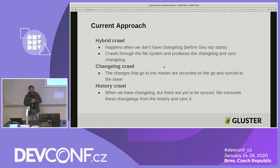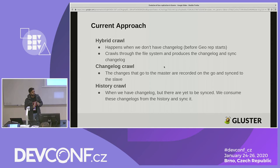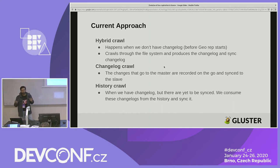The third scenario: you have a number of change logs already made but you've stopped geo-replication for some reason. You haven't synced those change logs, so there's a huge backlog on the master yet to be synced. Here you use history crawl, which consumes all the change logs produced so far from the master to sync them to the slave.